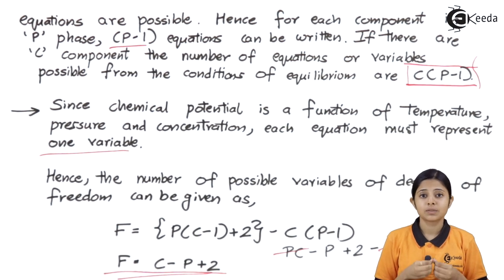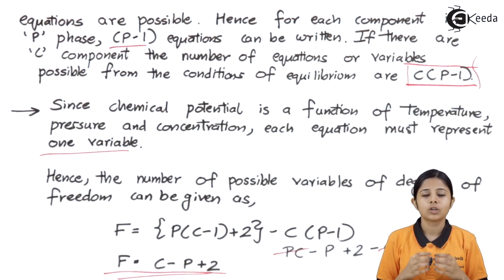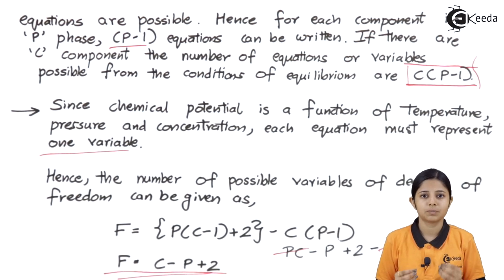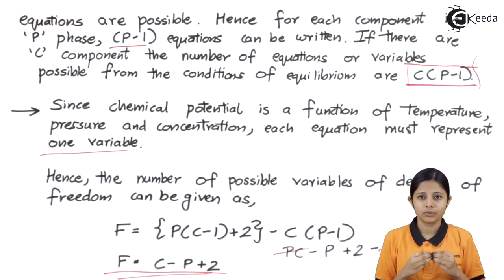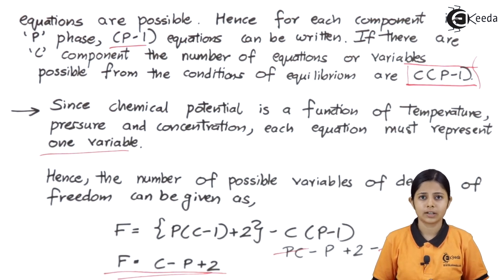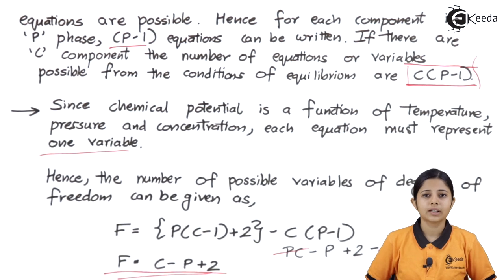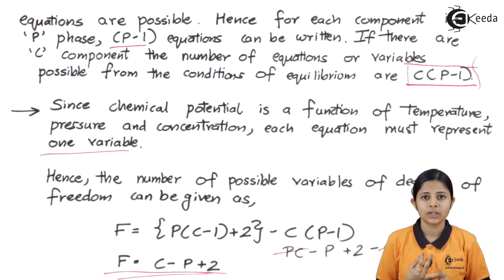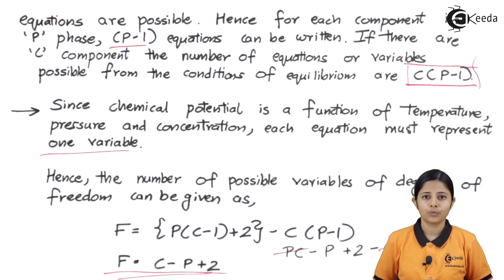So here we studied the Gibbs phase rule: F equals C minus P plus 2, where F is degrees of freedom, C stands for components, and P is phases. We studied that degrees of freedom are affected only by three variables — temperature, pressure, and concentration — and that gravitational, magnetic, or electric fields do not affect the state of equilibrium. We also saw how the phase rule has been derived and finally obtained the phase rule equation. Thank you so much for watching. Stay tuned to eKida and subscribe to eKida.